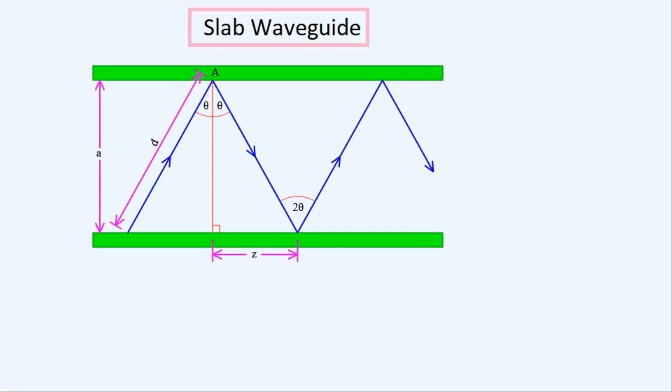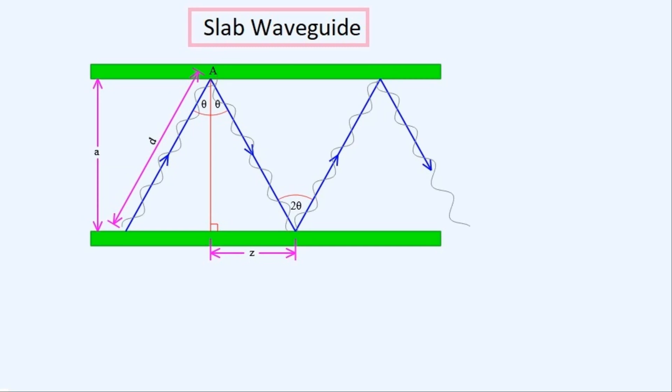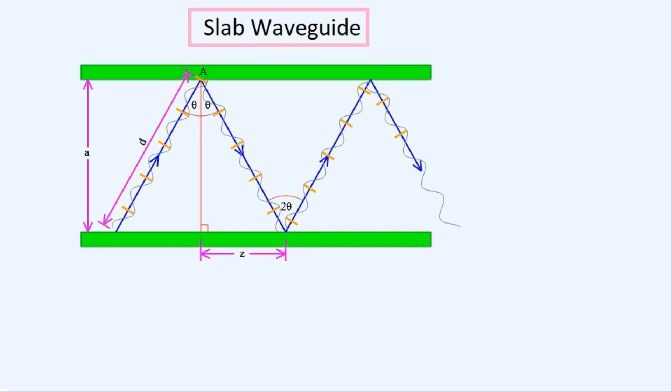The ray propagates in one direction along the waveguide at an angle of theta as shown. It propagates a distance of z along the waveguide when it bounces off one plate to meet the second plate. The total distance that the ray travels is d when it travels from one plate to another. The ray will travel at the speed of light, which is constant, so its propagation along the waveguide will be slower than the speed of light. This is what the ray of radiation looks like as a wave as it travels down the waveguide with troughs and crests. We can mark the crests of this wave with short orange lines that are perpendicular to the rays. The distance between these short lines is one wavelength.